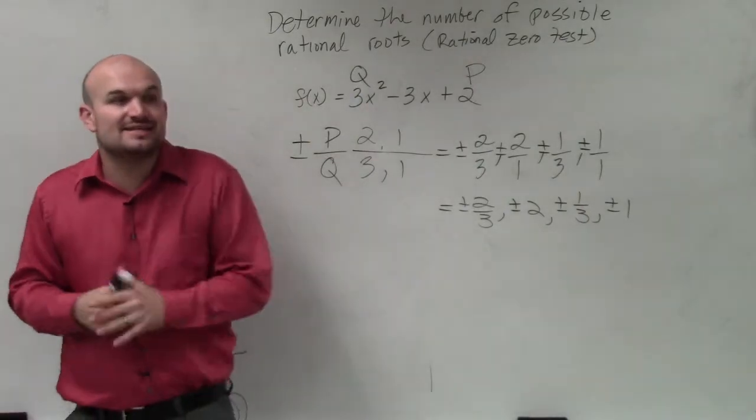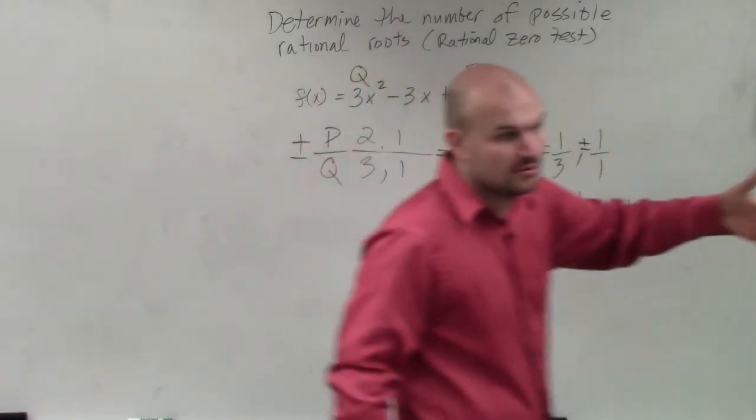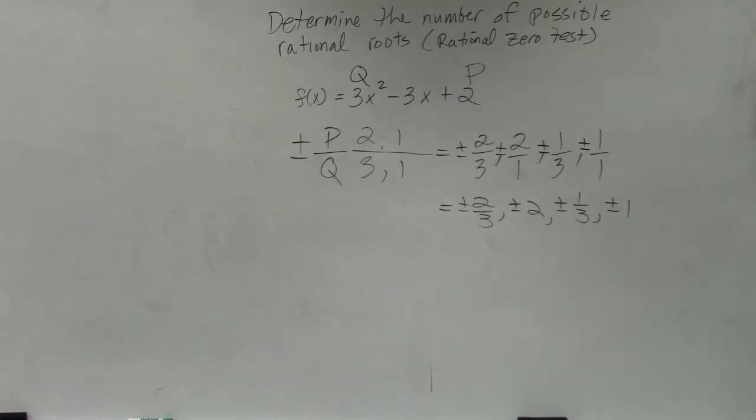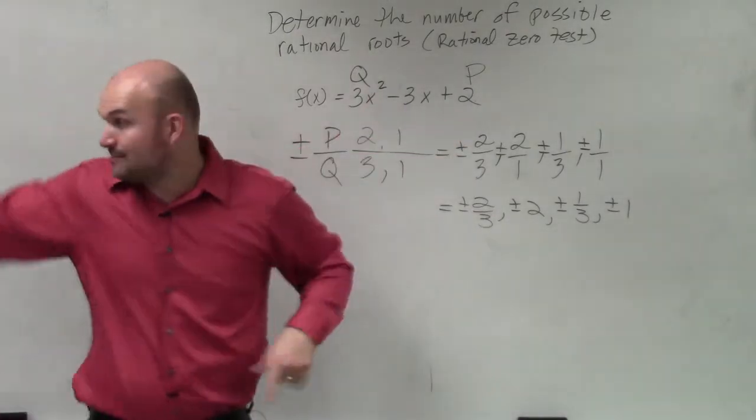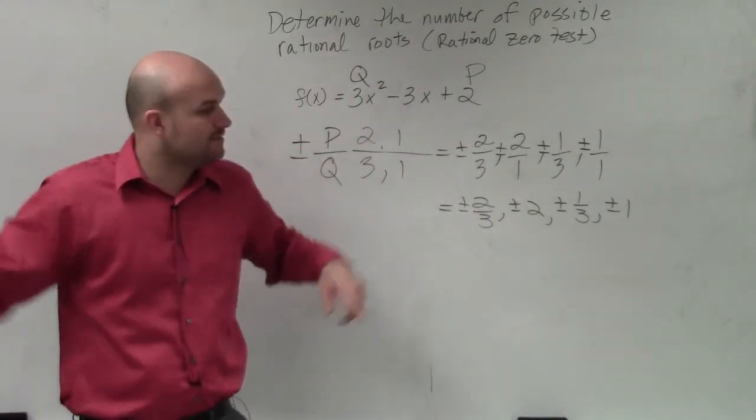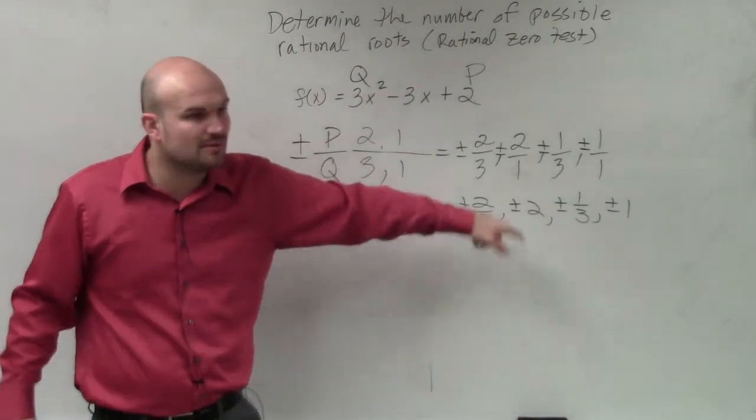So what that tells us is if you have a rational zero, remember when we had zeros like x equals 5 or x equals 1 half? If you have a rational zero, it is going to be one of those rational zeros that I just listed. So if we have a zero for this polynomial, if we have a rational zero, not imaginary or not irrational, but if we have a rational zero, it's going to be one of these numbers.